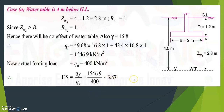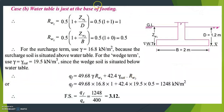For Case 2, the water table is just at the base of the footing, meaning ZW1 equals D equals 1.2 meters. Substituting into the formula, RW1 equals 0.5 into 1 plus ZW1 divided by D equals 0.5 into 1 plus 1, which gives 1. For RW2, since the water table is at the foundation base, ZW2 equals 0, giving RW2 equals 0.5 into 1 plus 0, which is 0.5.